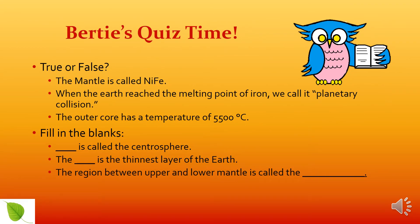Let's find out what you've learned today. True or false: the mantle is called nife. When the earth reached the melting point of iron, we called it planetary collision. The outer core has a temperature of 5,500 degrees Celsius. Fill in the blanks: dash is called the centrosphere. The dash is the thinnest layer of the earth. The region between the upper and lower mantle is called the dash.